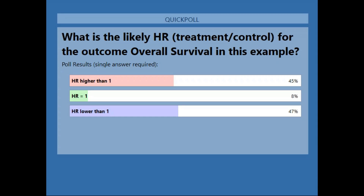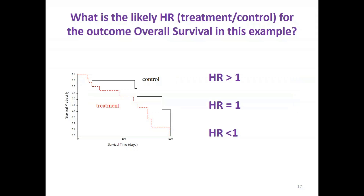45% answered a hazard ratio higher than one, and that is the correct answer. Looking at the survival curve, the survival probability for the treatment group is consistently lower than for the control group across all time points, suggesting that prognosis is worse in the treatment group — there's a higher hazard of the event of interest on treatment.